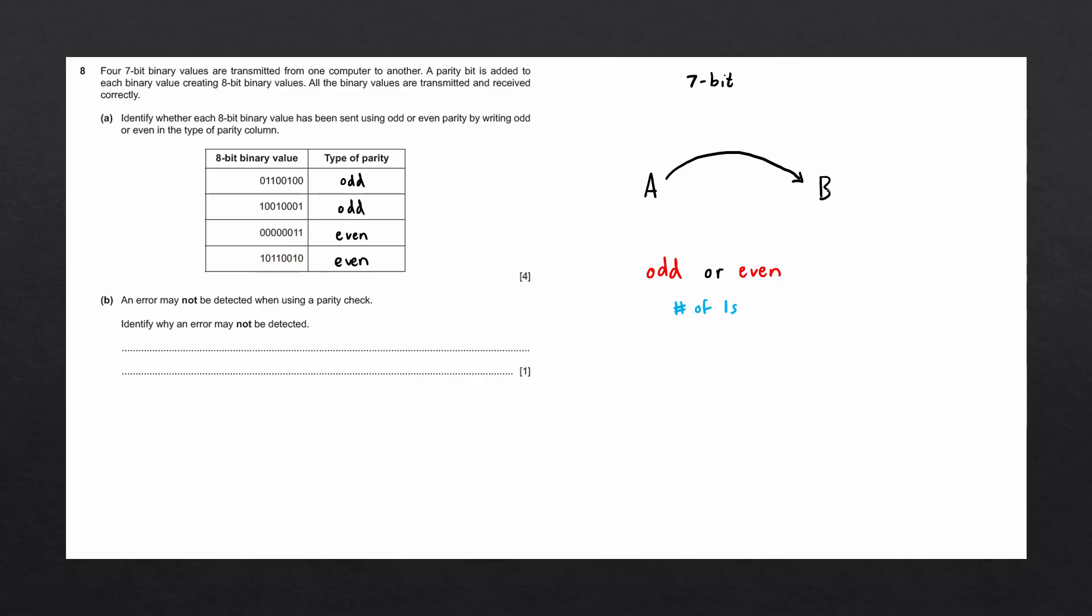When these bytes are received by B, B does the process that we just did, where it checks the number of ones in the number. In the last case, we had even parity. If B detects an odd number of ones, in other words, one of the bits within our binary number is flipped, that means there was an error during transmission. We're going to request A to resend that byte.